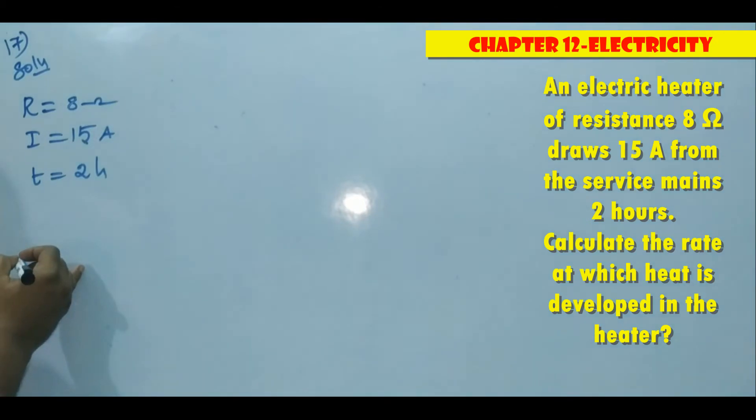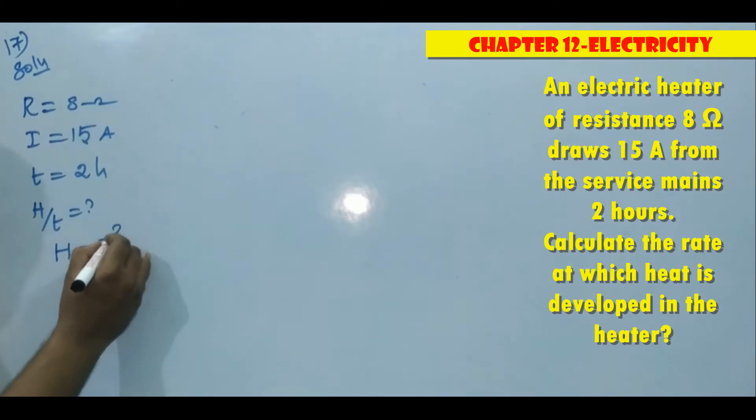Calculate the rate at which heat is developed in the heater. Rate of heat means h by t is what they are asking. So we have a formula for heat produced in the circuit. Joule's law of heating h is equal to i squared r t. Rate of heat they are asking. Then h by t is equal to i squared r.